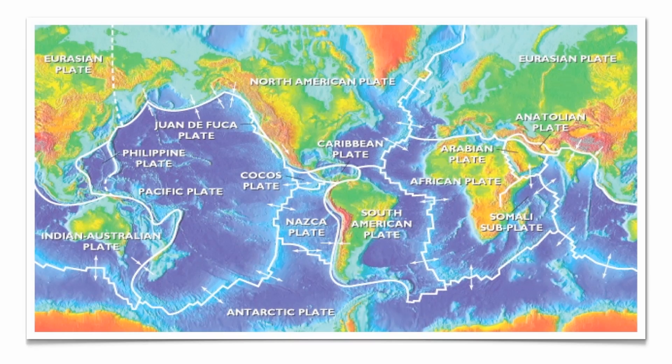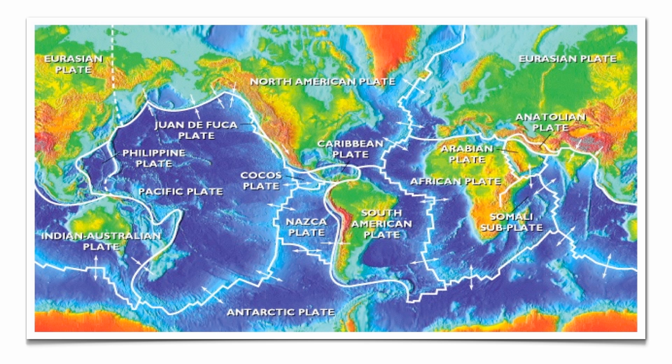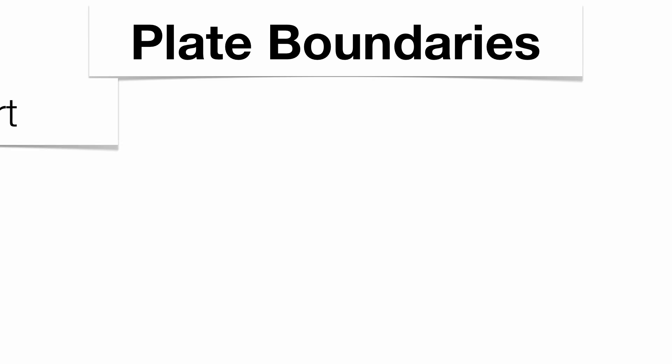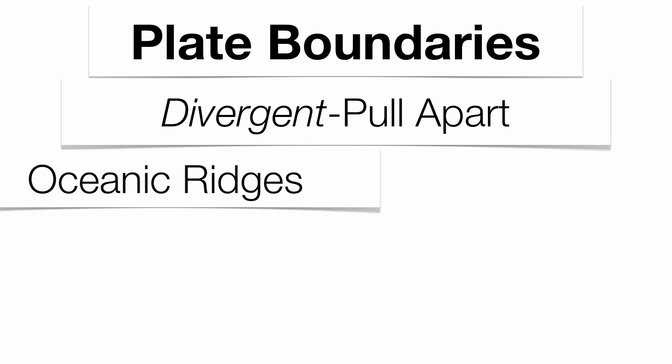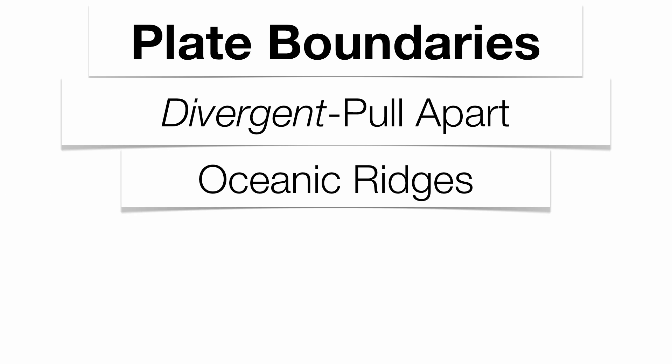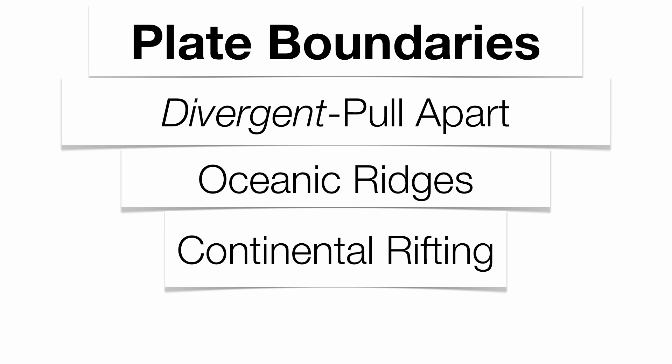This is one of three types of plate boundaries on the planet. We have convergent, we have transform, and we're going to be talking about divergent. Divergent just means pulling apart or moving away from each other. There are two different ways in which you can get divergence on the planet: oceanic divergence, called oceanic ridges, or continental divergence, called continental rifting.